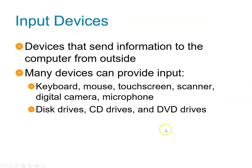To refresh your mind on input and output devices: an input device is a device that sends information to the computer from the outside world. Many devices can provide input, such as keyboards, mouse, touchscreen, digital camera, microphone, and DVDs. Output devices would be things like printers and monitors. Some screens can be both input and output — for example, a touchscreen lets you provide input by touching it, and also displays output. DVDs and CDs can be both input and output, because you can write data to a DVD and also read from it.